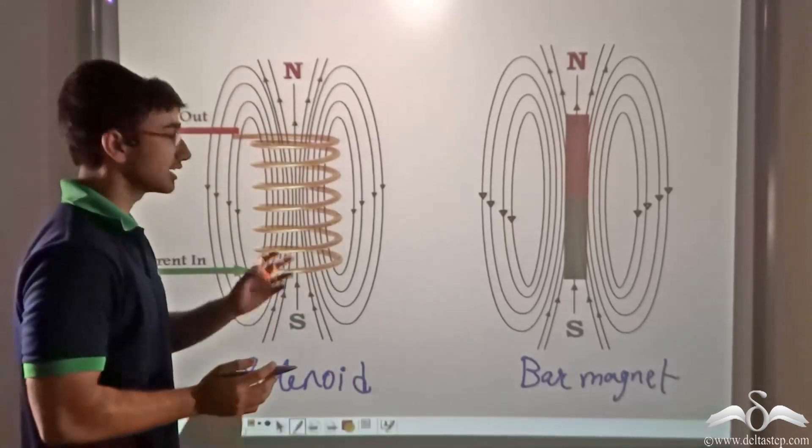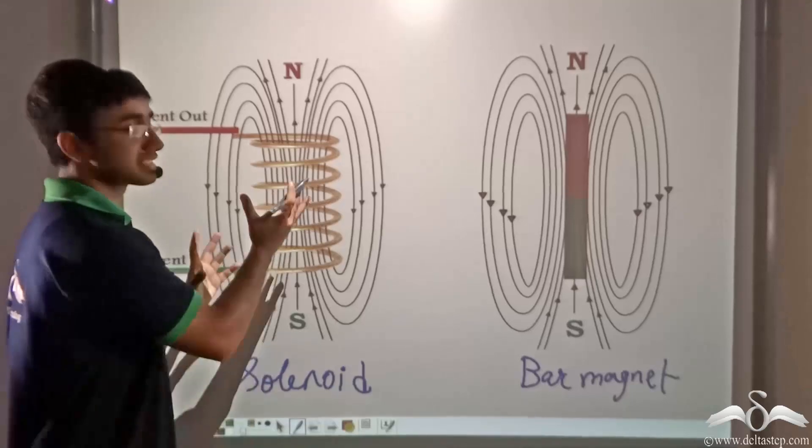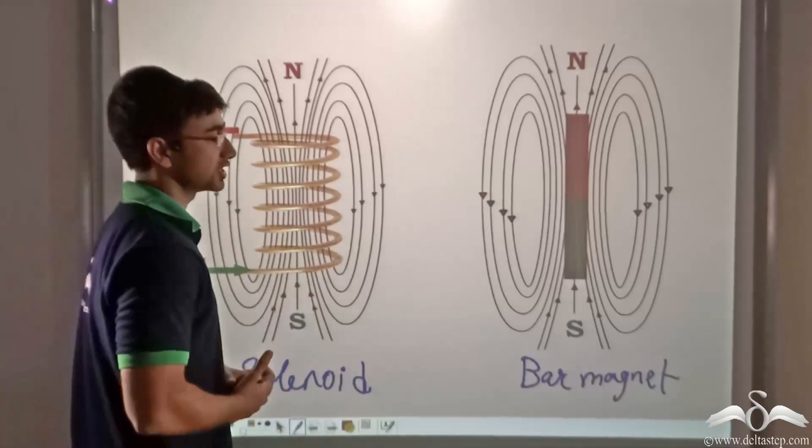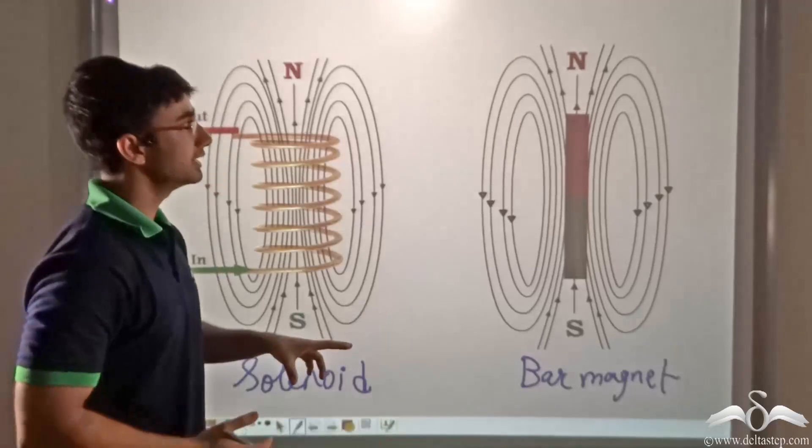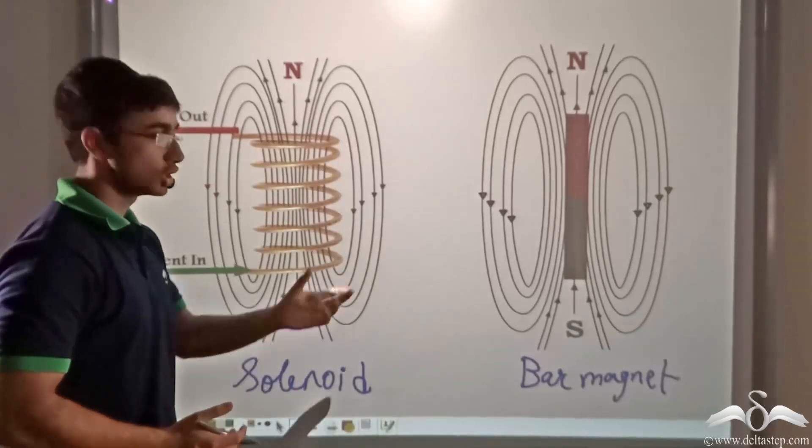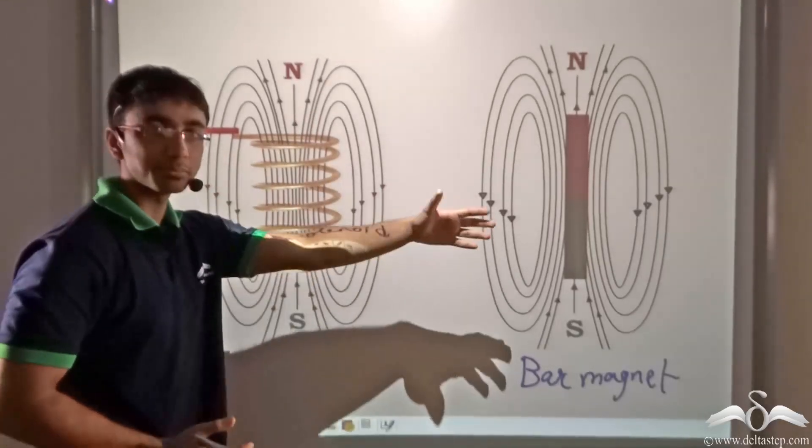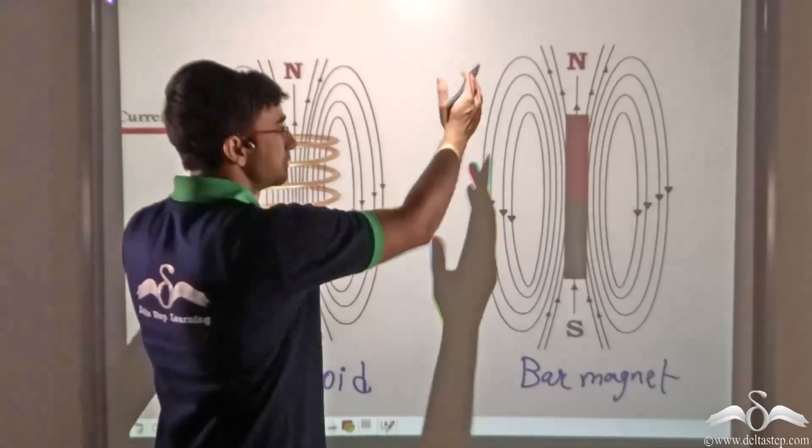That is, the magnetic field lines around the solenoid have a similar direction and orientation as the magnetic field lines of the bar magnet, provided the north and south of the solenoid as well as the bar magnet are facing the same direction.